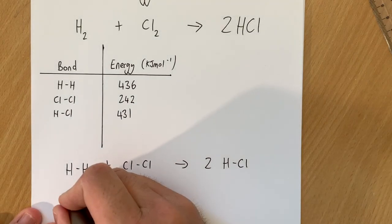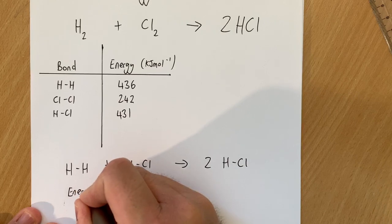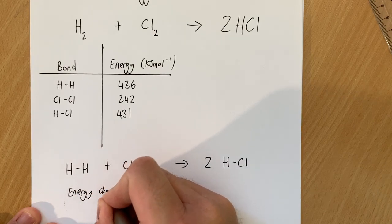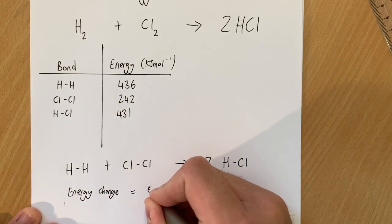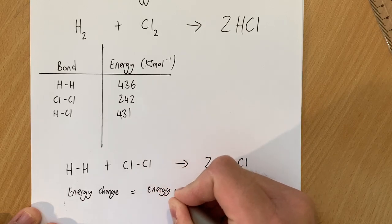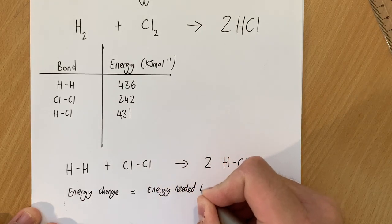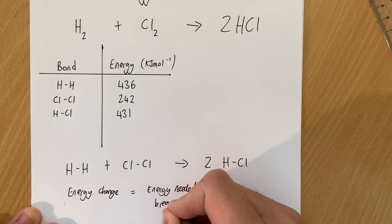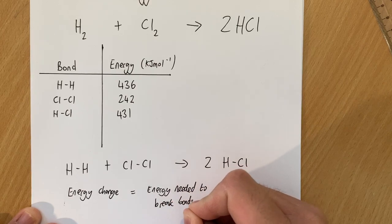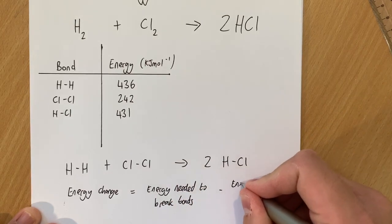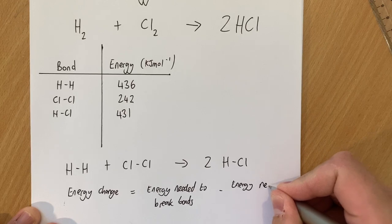So how do we need to work out what's going on here? Well, the energy change is equal to the energy needed to break bonds minus the energy needed to form bonds.